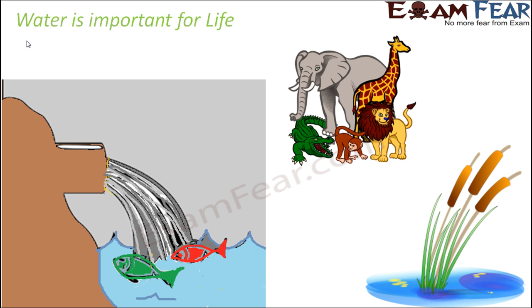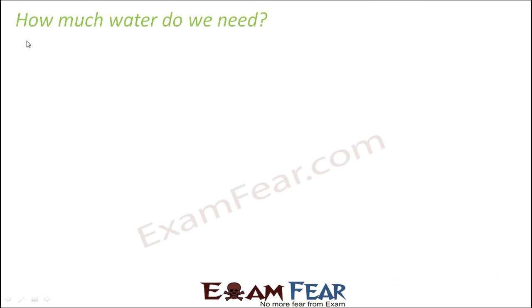Water is important for life — and it is not only human beings who need water. All animals, insects, birds, and microorganisms need water for their survival. Whether it is plants, animals, insects, or aquatic animals, everybody needs water. So we can clearly see that water is important for all life.